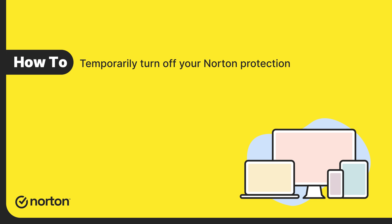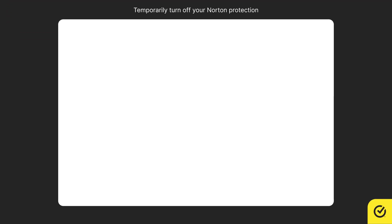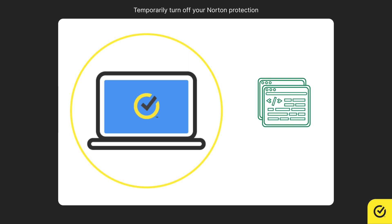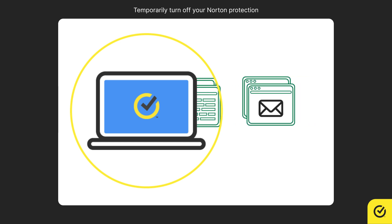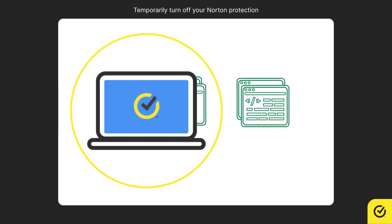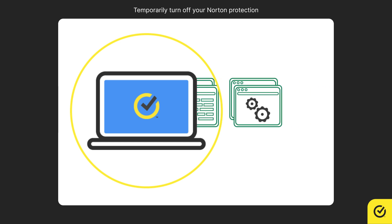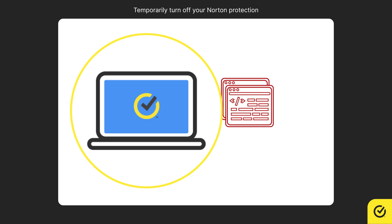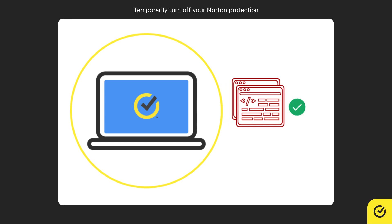Hi! Let us see how to temporarily turn off your Norton protection. In some cases, your Norton product may block a suspected activity or an application. If you know that the blocked activity or application is safe, you can unblock it by temporarily turning off your Norton protection.